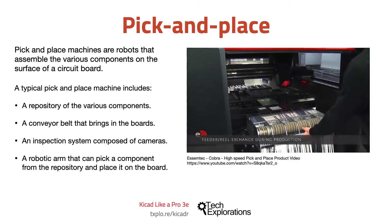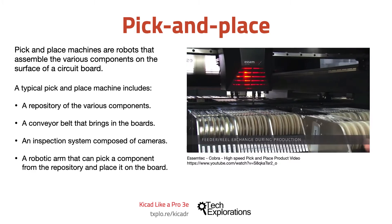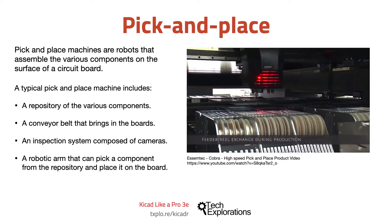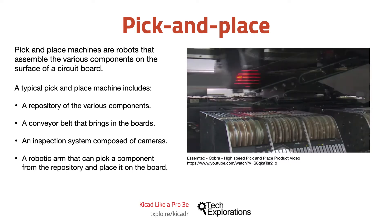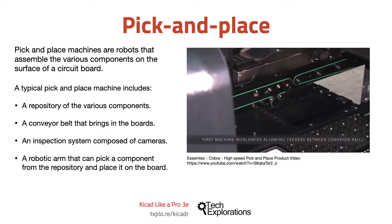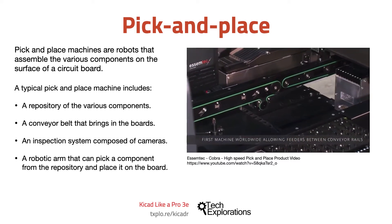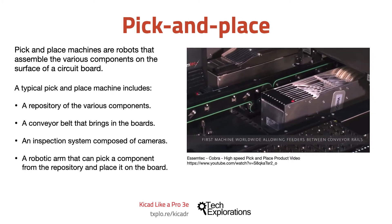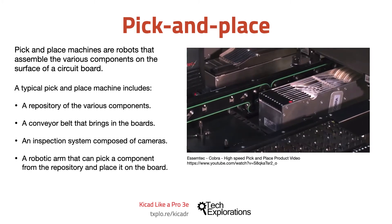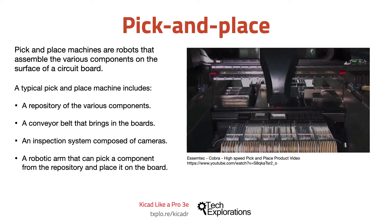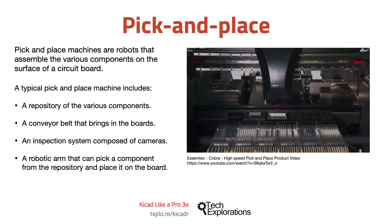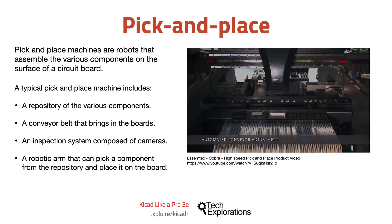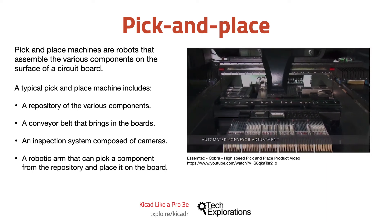A typical pick and place machine includes a repository of the various components that are to be placed on the board, a conveyor belt that brings in the boards, and an inspection system composed of cameras that can optically recognize the board, components, and other guidance markings on the board.